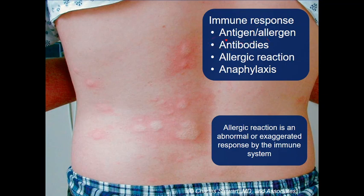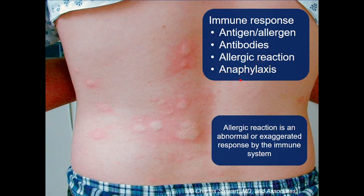An antibody is a protein your body makes directed at allergens and antigens for the long-term response. When you get a vaccine, you generate antibodies so that if you're exposed to that antigen later, you have the antibodies necessary to respond. An allergic reaction refers to the processes specific to the allergen you're exposed to, but anaphylaxis is the extreme tail end — a systemic, severe allergic reaction. For example, touching nickel gives you an itchy hand, but a bee sting causing a full-body, near-death reaction is anaphylaxis.